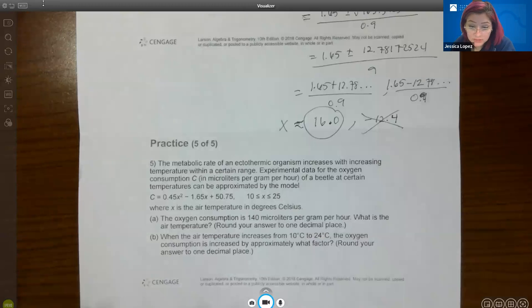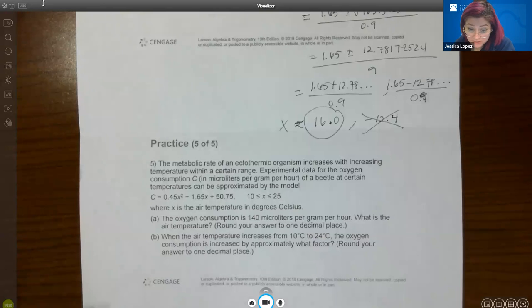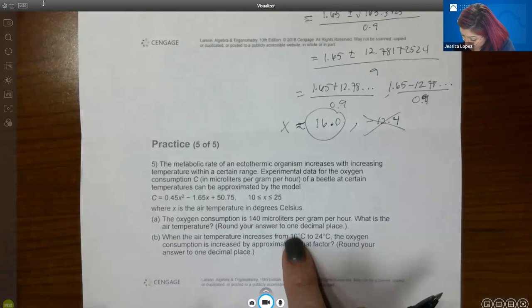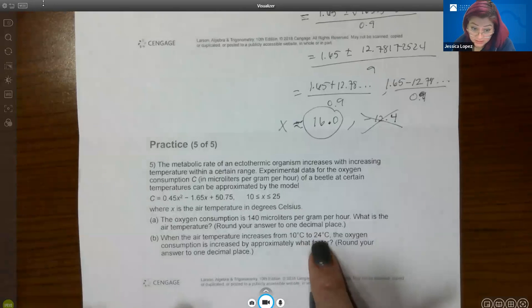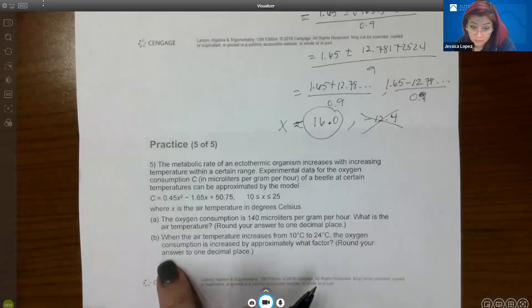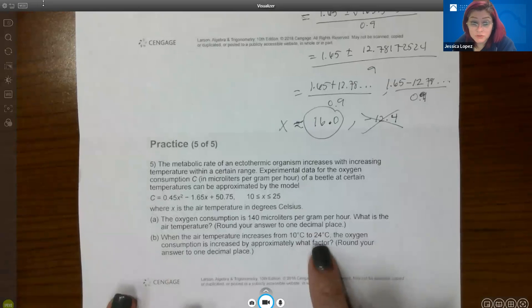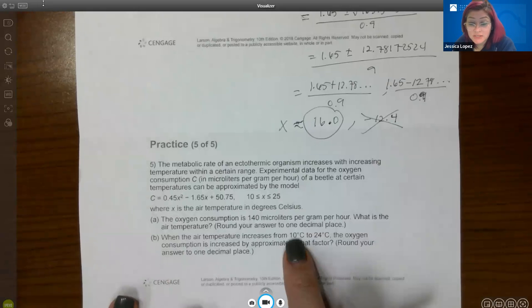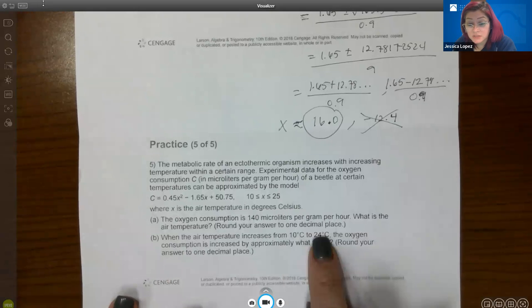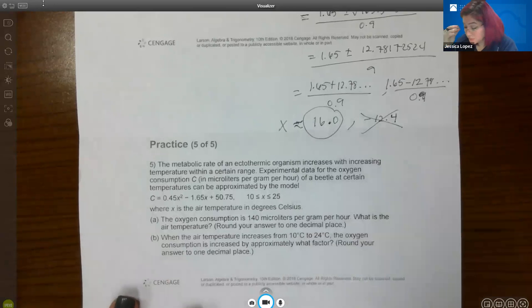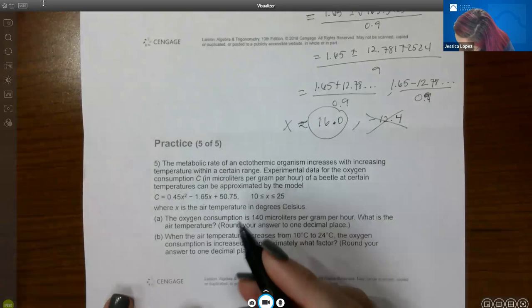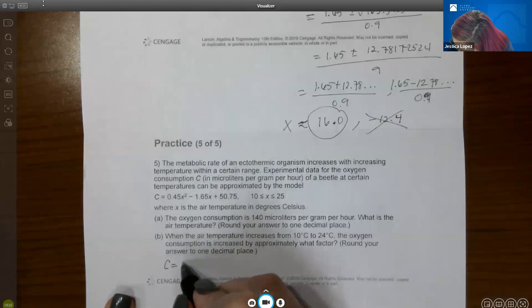Now for part 2, it says when the air temperature increases from 10 degrees Celsius to 24 degrees Celsius, the oxygen consumption is increased by approximately what factor. So essentially what we'll do is we'll figure out what the consumption is for 10 degrees. Then we'll figure out what's the consumption for 24 degrees. And then we'll see what the difference is between those two. Okay, so let's plug in first the 10 degrees Celsius.